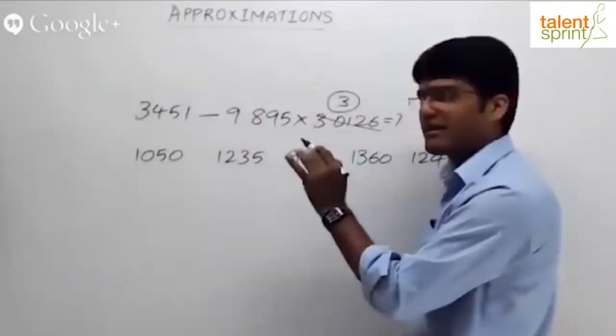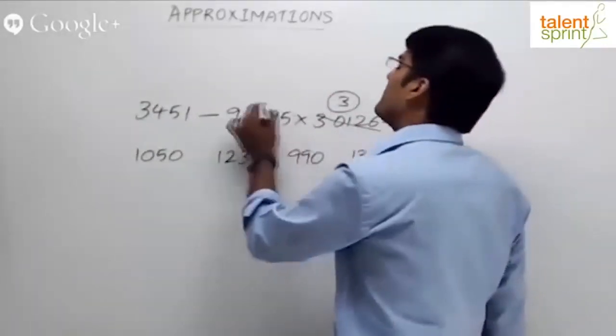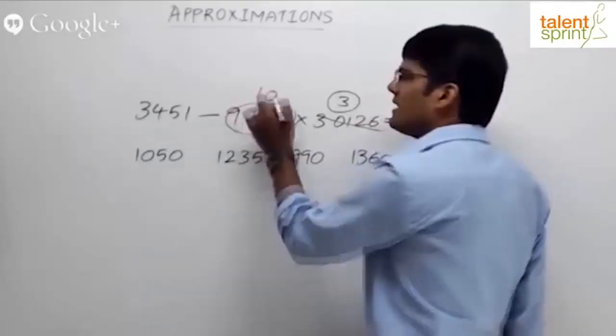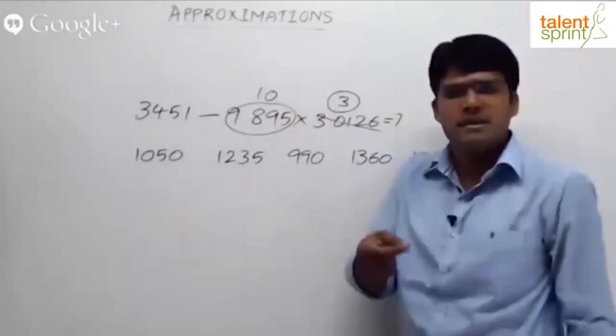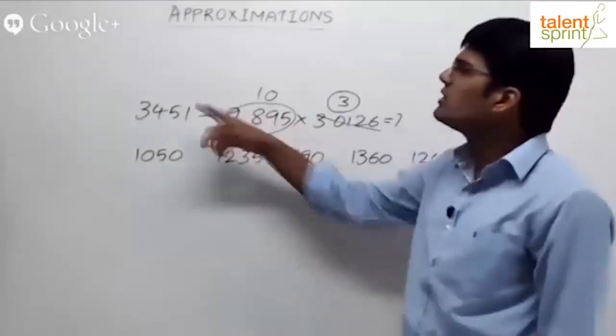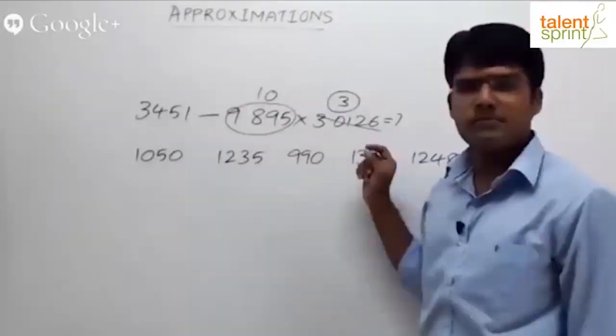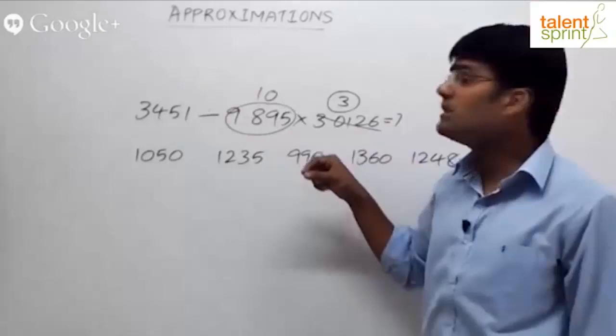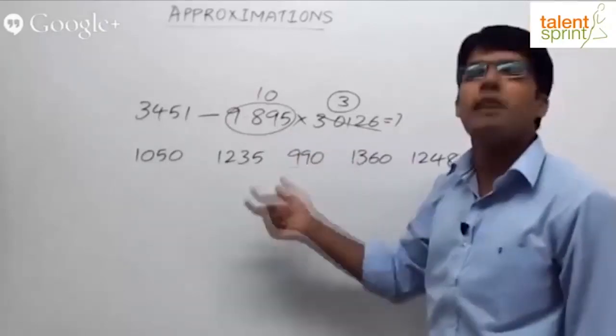3451, let us keep it as 3451. 9.895, can I take it as 10? Yes, nothing wrong. 9.895 and 10, there is hardly any difference. 0.105 is the difference. So 3451 divided by 10. 3451 divided by 10 is how much? 345. 345.1.